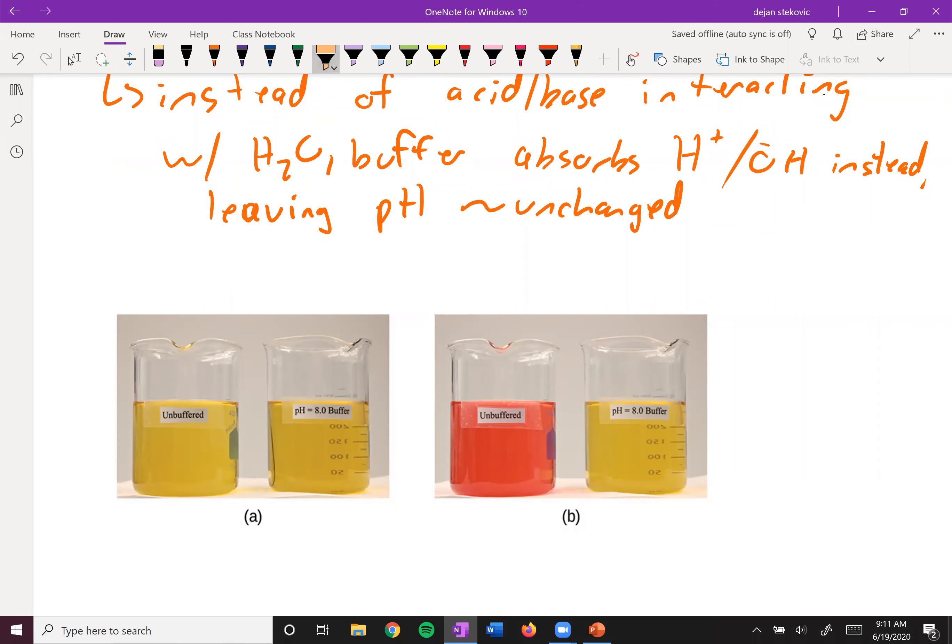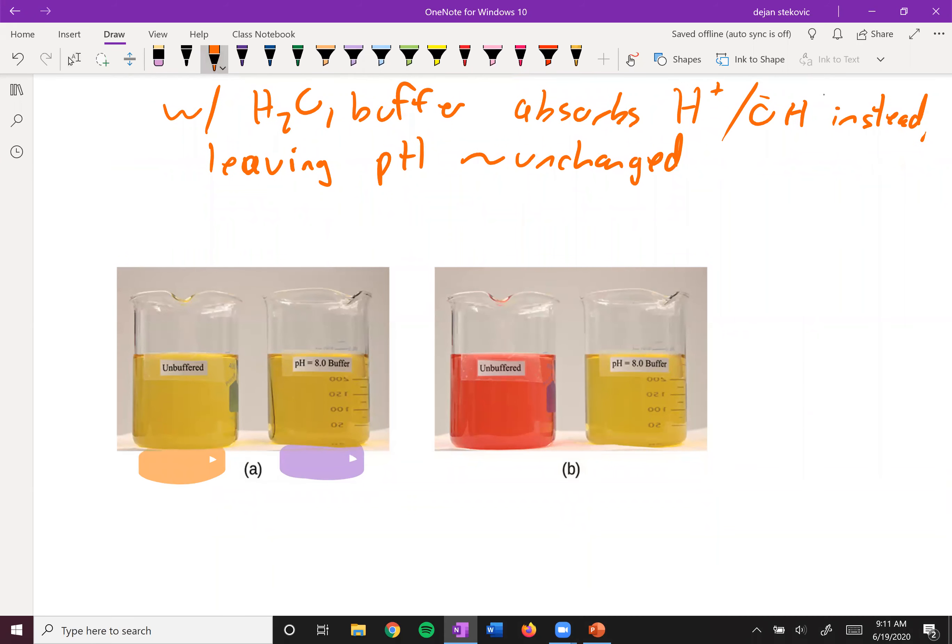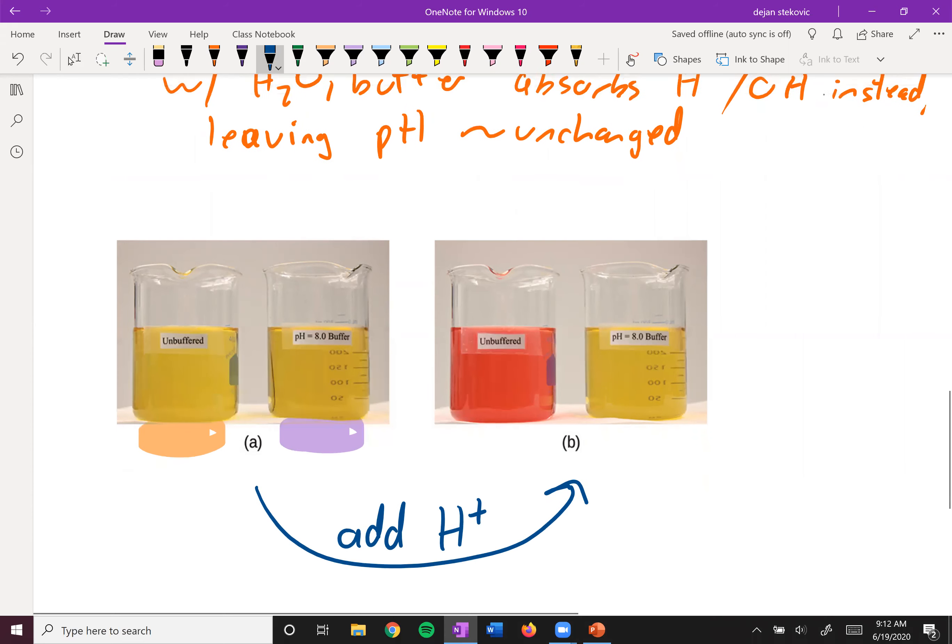So here's just an example: on the left side we have an unbuffered solution and then a buffered solution. Going from A to B we're going to add H+, and we've got an indicator in there. The indicator will turn red when the solution has become acidic, so we can tell that our unbuffered solution became acidic - we added some acid, it became acidic. However, our buffered solution did not become acidic even though we added H+. You can see that the pH stays the same.